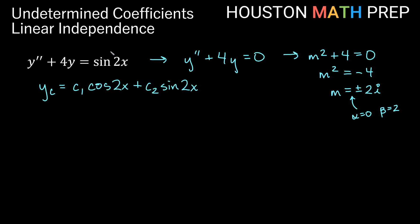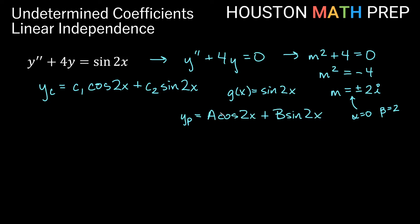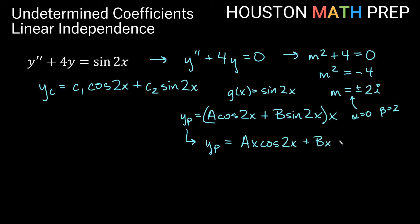Our g of x is sine 2x. Normally we would choose y sub p to be some multiple of cosine 2x plus some multiple of sine 2x. But these are constant multiples of the c1 and c2 terms in our complementary function, so we need to multiply by x. We will use y sub p equals ax cosine 2x plus bx sine 2x.